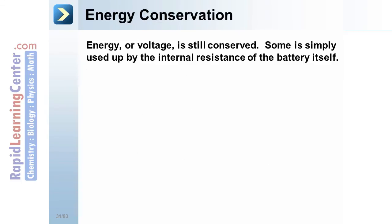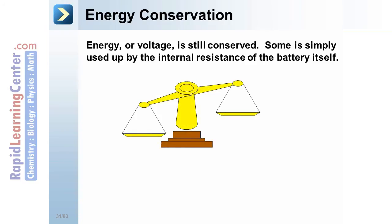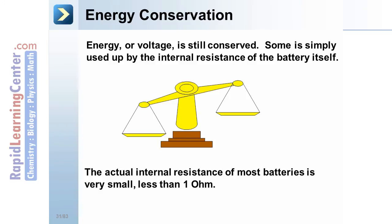Energy conservation. Energy or voltage is still conserved. Some is simply used up by the internal resistance of the battery itself. So don't think of this as voltage or energy that is actually lost in terms of it disappearing. The actual internal resistance of most batteries is very small, usually less than an ohm.